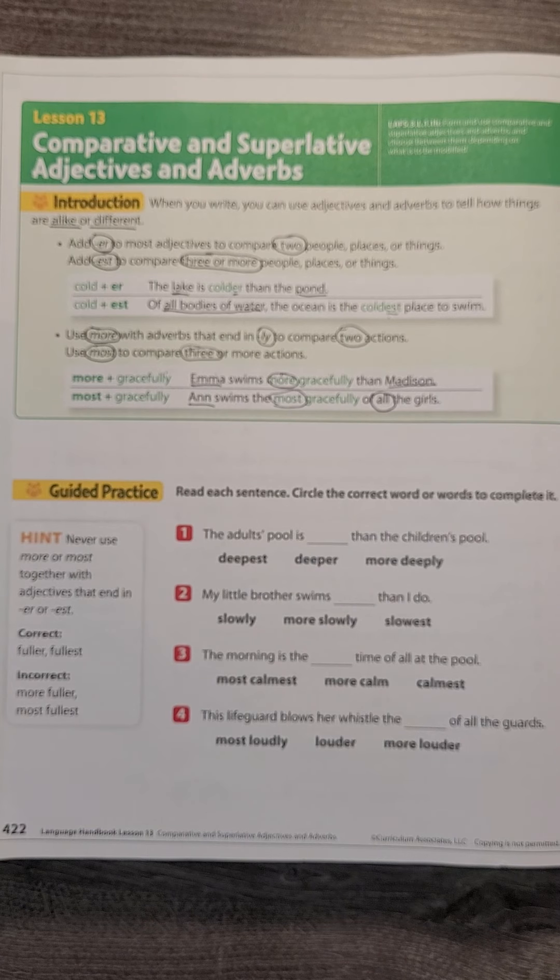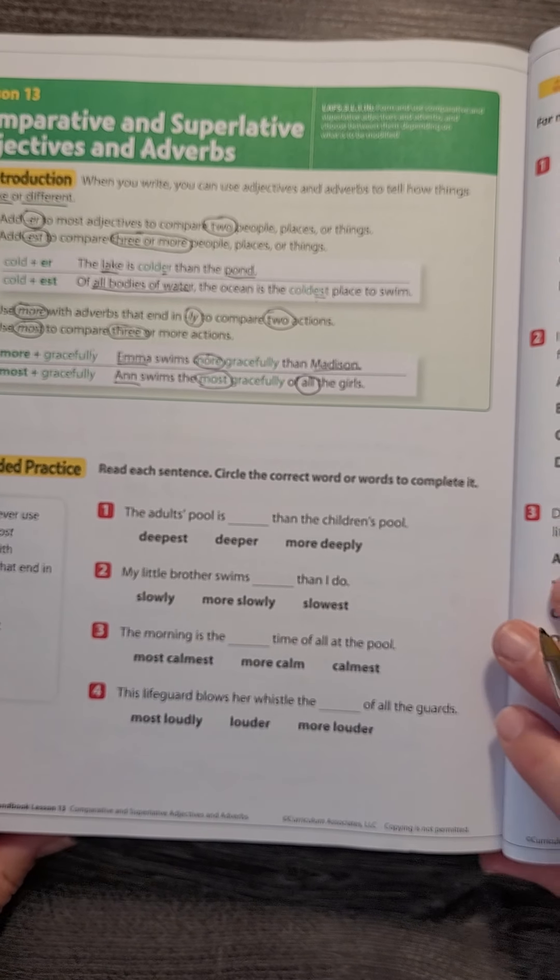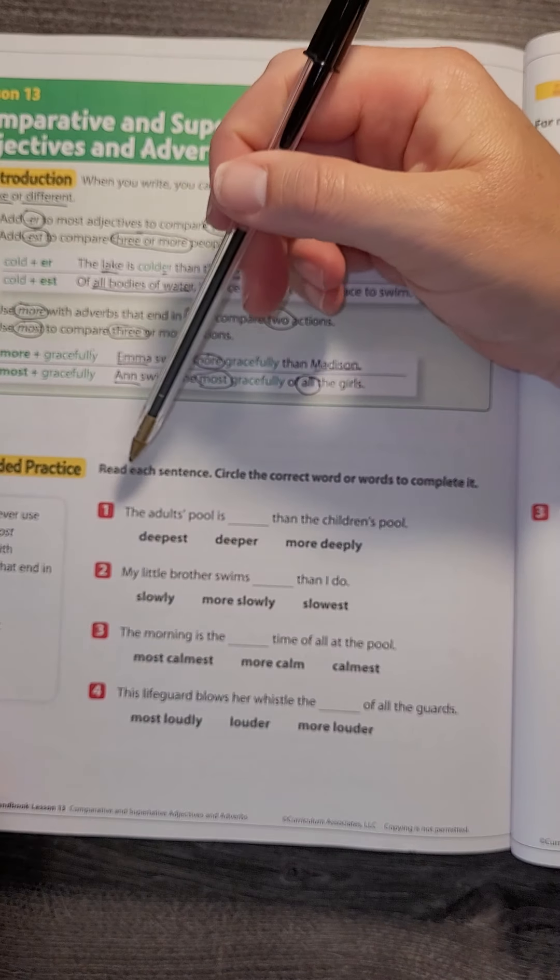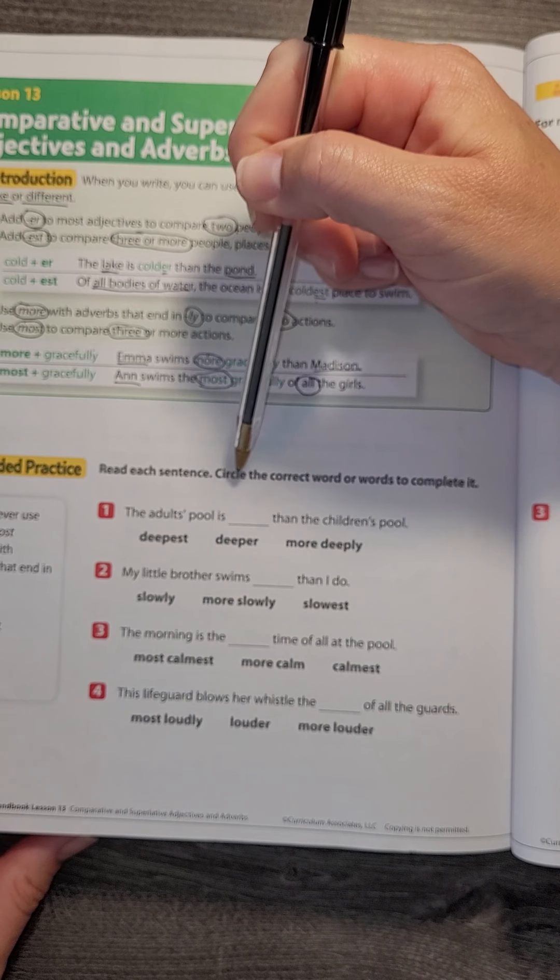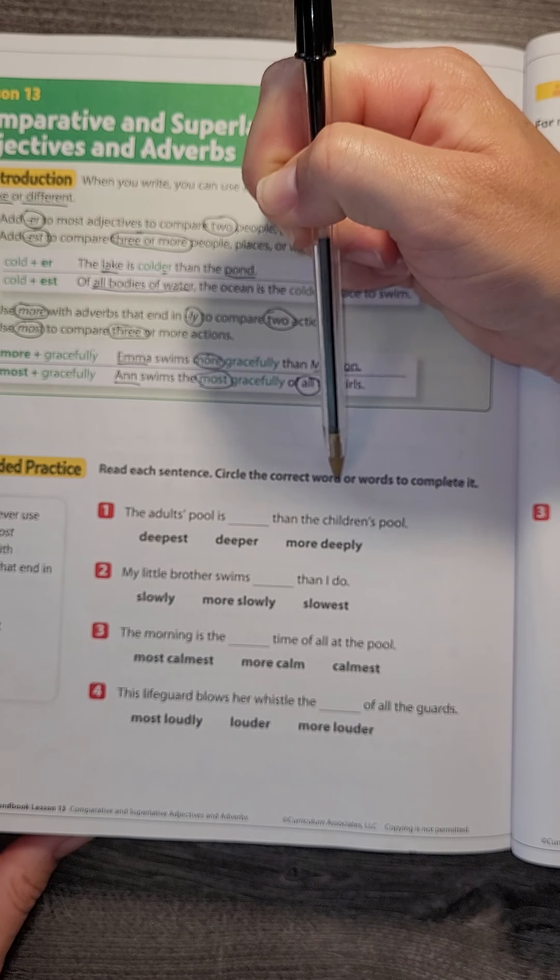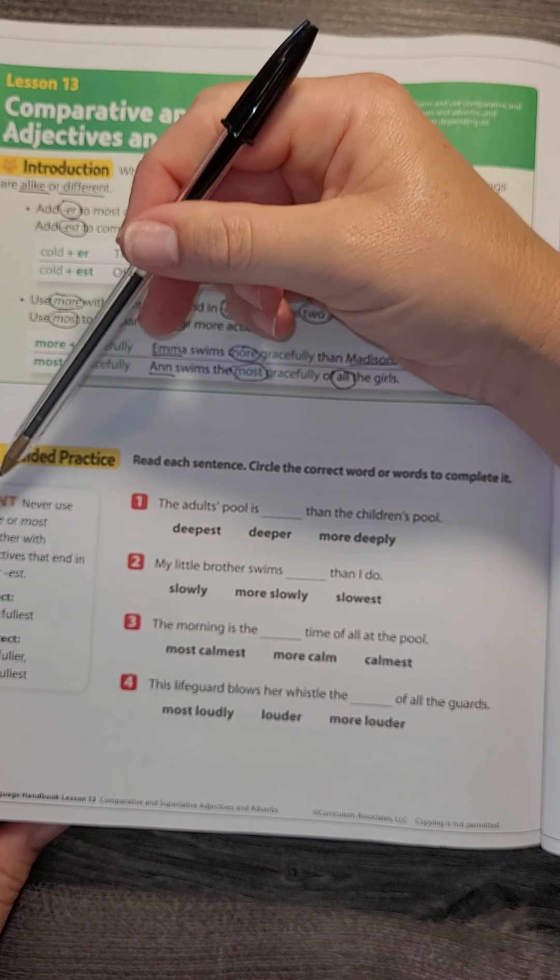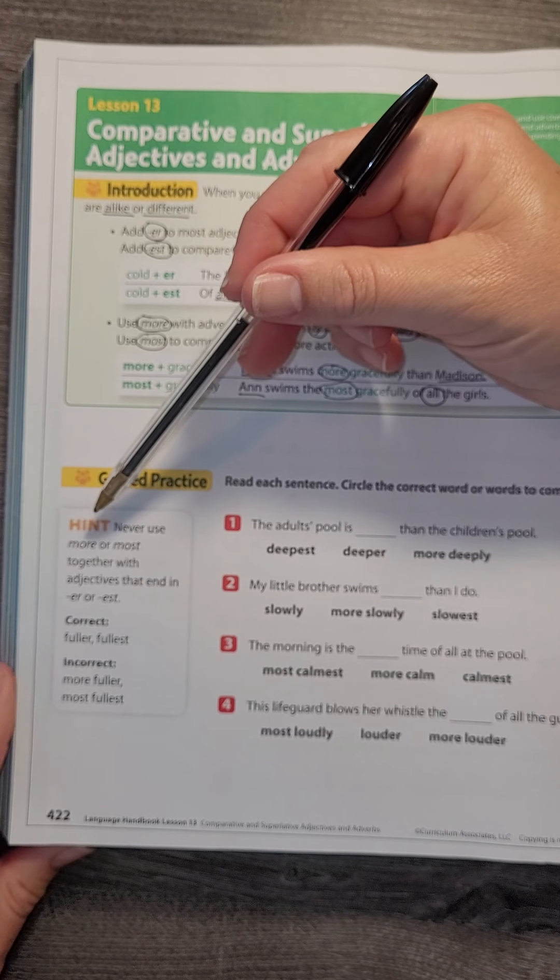Now that we've done that, let's practice a little together in the bottom of our book. We're going to read each sentence, circle the correct word or words to complete it, and I always look at my little hints off to the side.